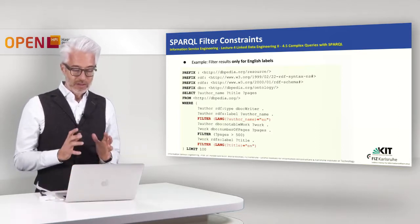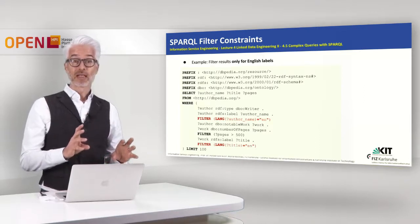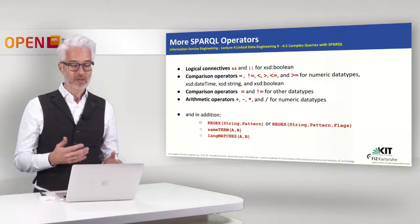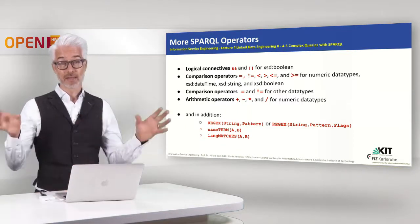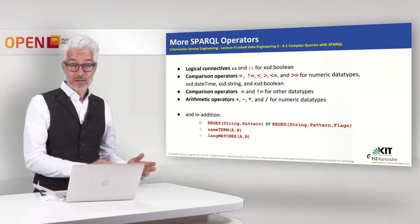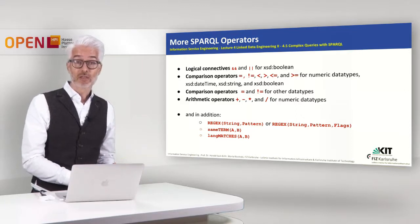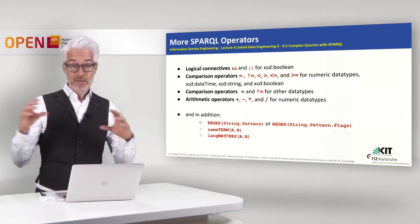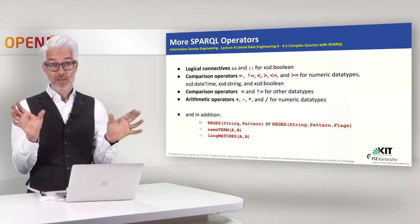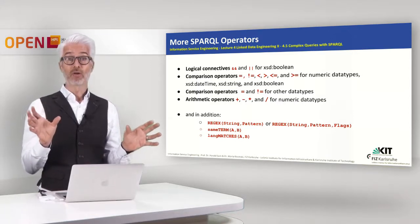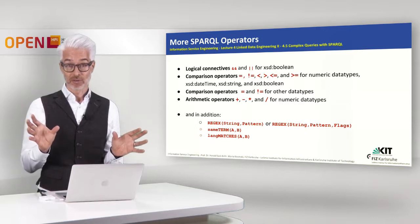In filter expressions you can combine several restrictions. Usually you do this with so-called SPARQL operators that you put inside your filter queries. When dealing with Boolean values, you have logical connectives — you can connect two separate filter queries by a logical AND if both have to be fulfilled, or a logical OR if only one of them has to be fulfilled.